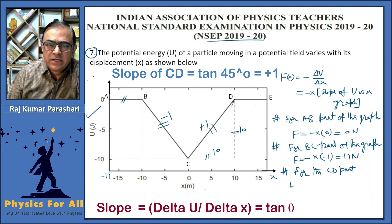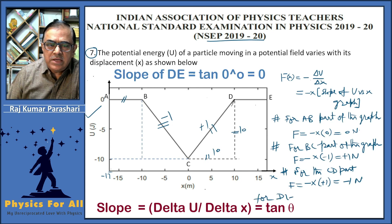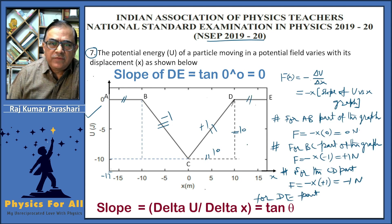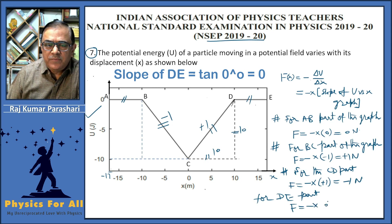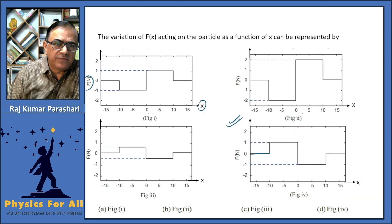For CD, the corresponding value of force equals minus times plus one, which is minus one newton. For the DE part, the slope is zero, and hence the force is also zero. So: AB part force is zero newton, BC part force is plus one newton.